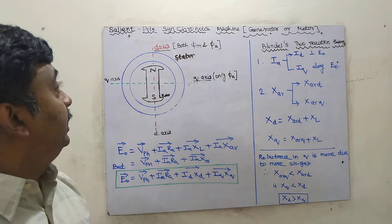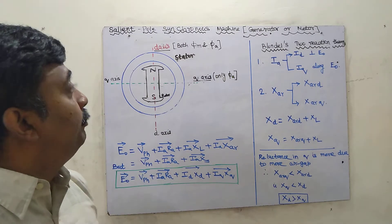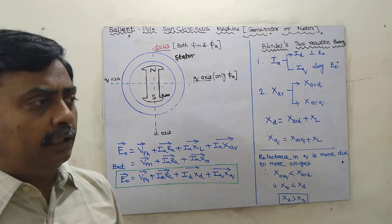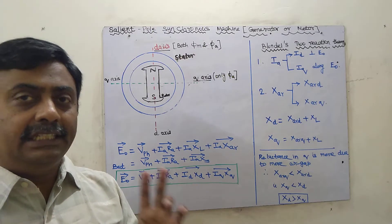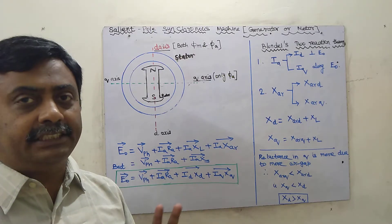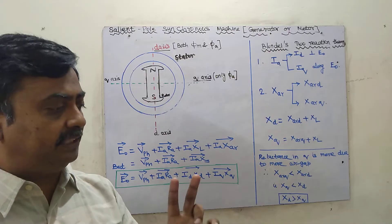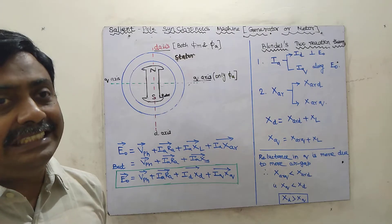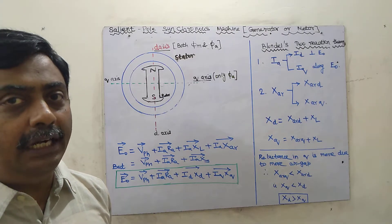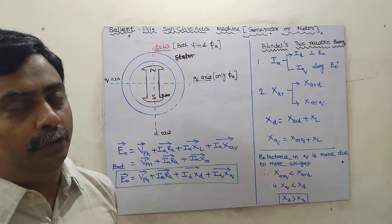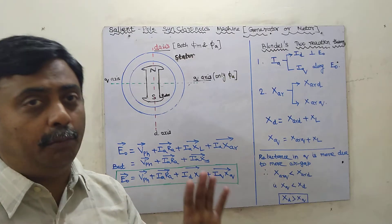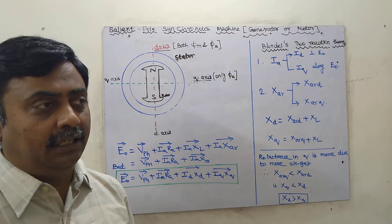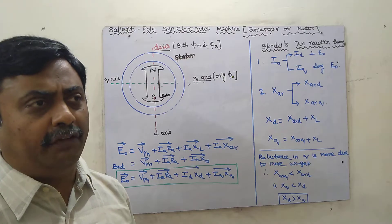We are going to study about salient pole synchronous machines, either generator or motor. In synchronous generators, we have already seen two types: salient pole and non-salient pole. So far, we have studied all about non-salient pole alternators or motors only.